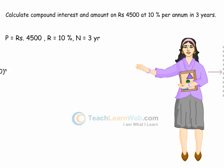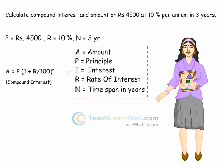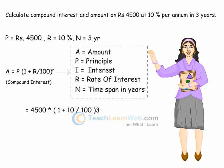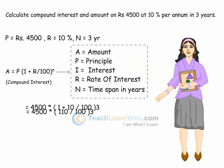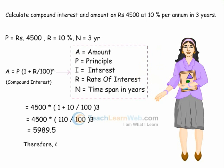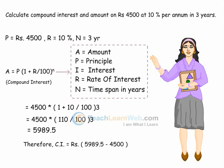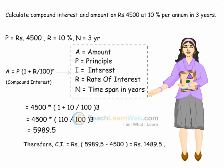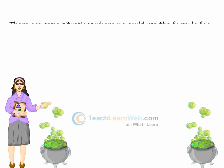A is equal to P of (1 + R/100) whole power N, which equals 4,500 into (1 + 10/100) whole power 3, giving A equal to Rs 5,989.5. Therefore, CI is equal to Rs 5,989.5 minus Rs 4,500, which equals Rs 1,489.5.